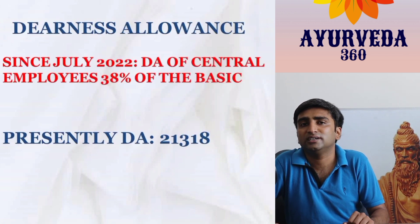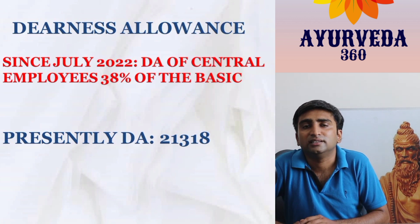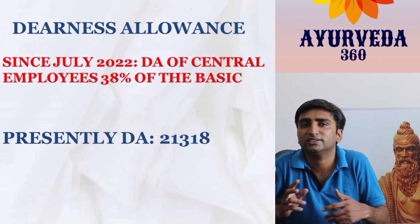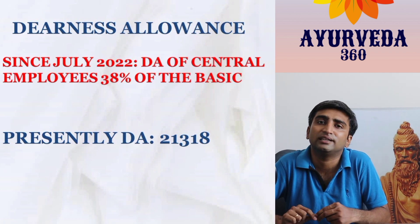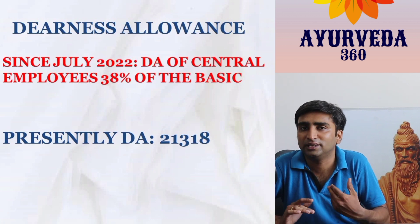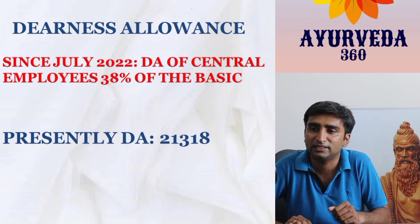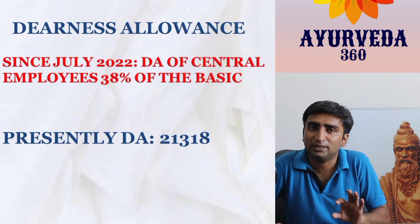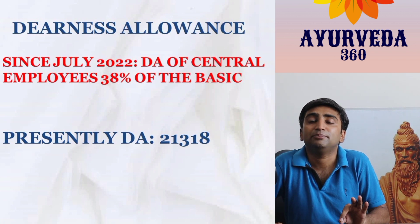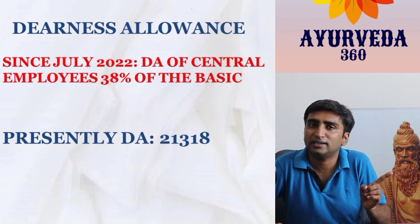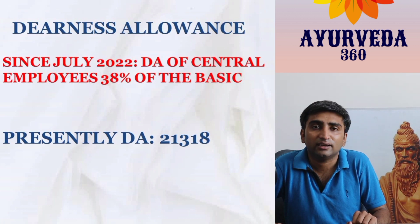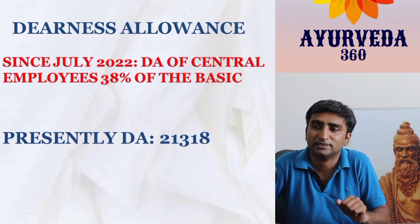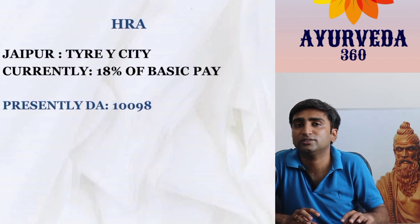The third component is Dearness Allowance (DA), calculated by the central government and universally applied to all central employees. It accounts for inflation and is revised every six months — usually a minimum increase of two to three percent. Presently, DA is 38% of the basic salary. For a basic of ₹56,100, DA comes to approximately ₹21,318.